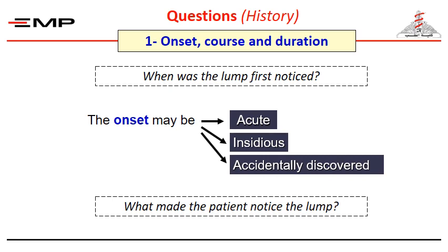A good question is: what made the patient notice the lump? The four common answers are: I felt it, or I saw it on washing; it started with pain, then I felt the lump at the painful site; someone else noticed it and told me about it; or I found it on self-examination, which is common in breast lumps in females.